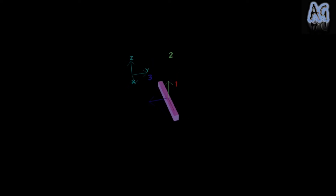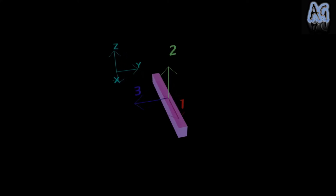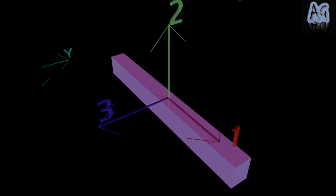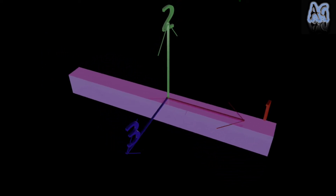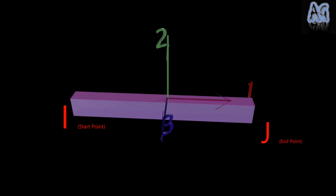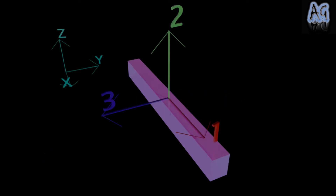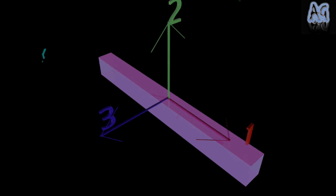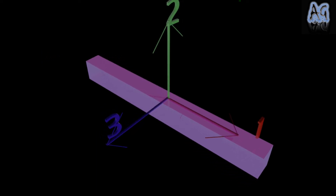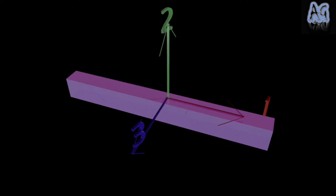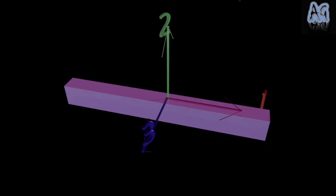For frame elements, local axis 1 is always the longitudinal axis of the element, with the positive direction directed from end I to end J. If the frame element is not vertical, local axis 2 is always parallel to the global Z axis. Local axis 2 will be along the depth of the frame element, and local axis 3 will be along the width of the frame element.